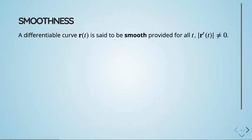Before we dive into motion, we need to address smoothness — it's a technical term for curves. A curve is differentiable if the limit of the difference quotient exists. But to be smooth in multidimensional space, there's one more condition: the derivative — the tangent vector — must never be the zero vector.